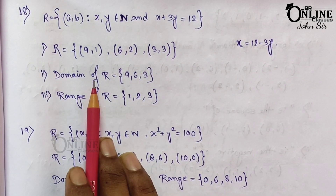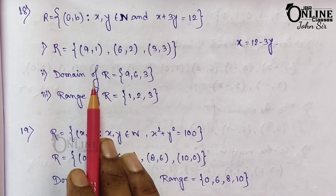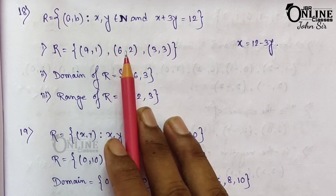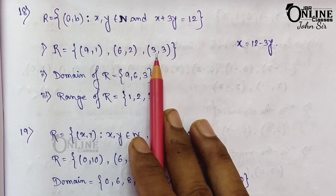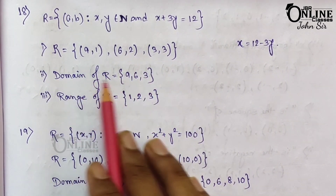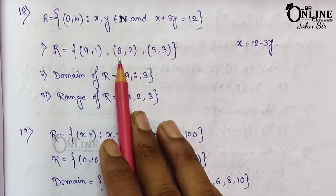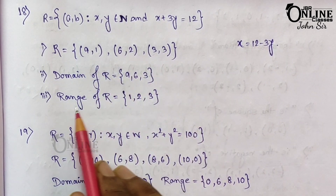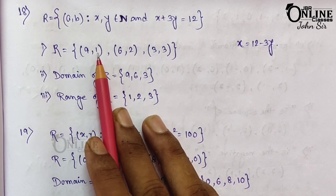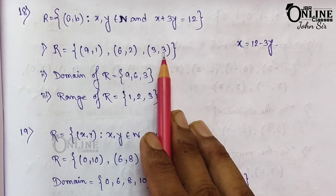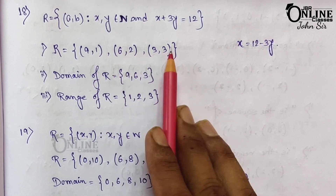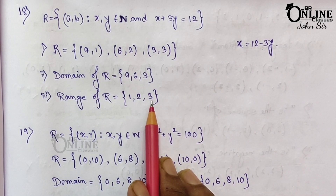Next, find the domain of R. The first components of the ordered pairs are called the domain, so the domain is {9, 6, 3}. For the range, write down the second components of the ordered pairs, which gives {1, 2, 3}.